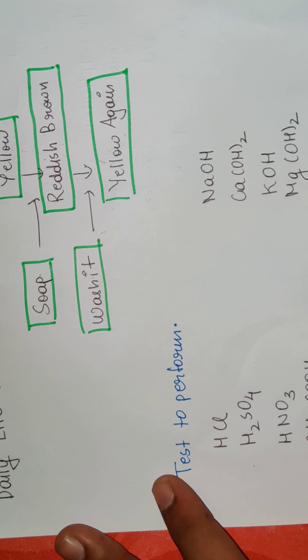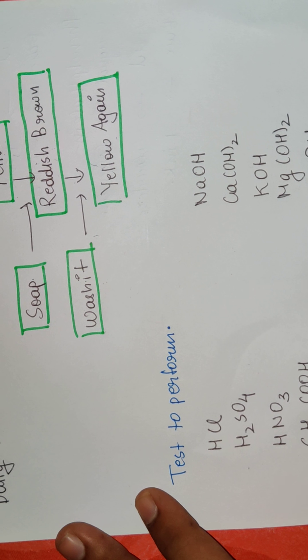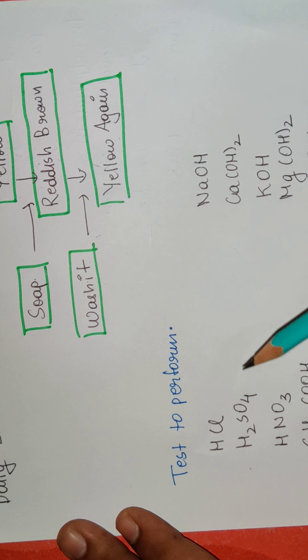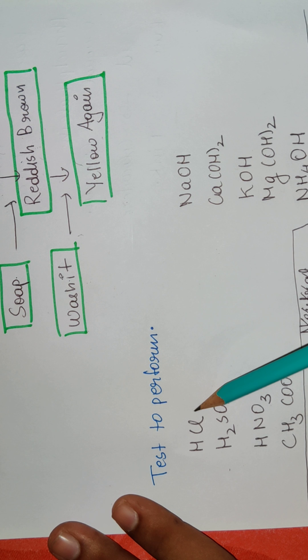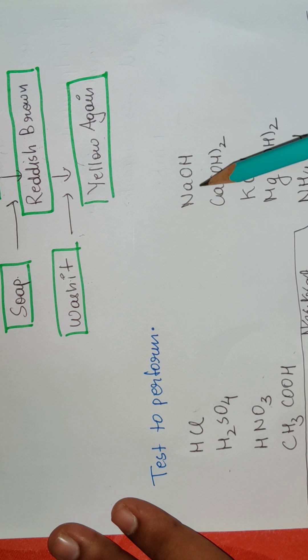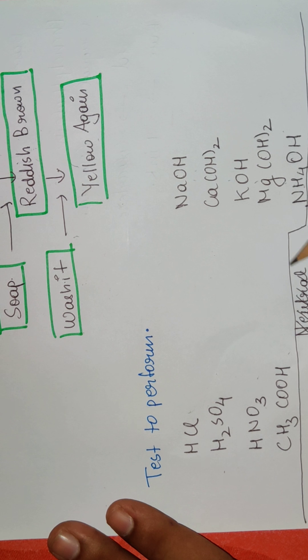Now, in our NCERT, we have given a test to perform. We are going to take these examples: HCl which is an acid, H2SO4 which is again an acid, HNO3 that is nitric acid, CH3COOH that is acetic acid. And then we are going to take a category of bases such as NaOH, calcium hydroxide, potassium hydroxide, magnesium hydroxide and ammonium hydroxide.